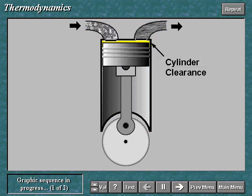In each cycle, there is an area of the cylinder that is not swept by the piston. A volume of gas remains in this area at the end of each compression stroke. This volume is called the cylinder clearance.